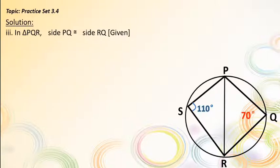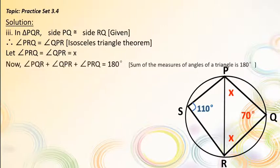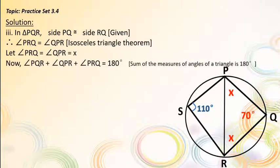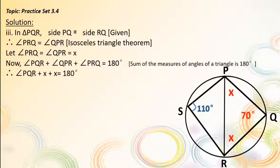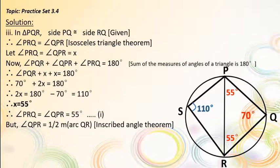Third, in triangle PQR, side PQ is congruent to side RQ. Therefore, by the isosceles triangle theorem, angle PRQ = angle QPR. Let the base angles angle PRQ = angle QPR = x. The sum of angles of a triangle is 180°. Therefore, angle PQR + angle QPR + angle PRQ = 180°, so 70° + x + x = 180°, giving 2x = 110°. Therefore, x = 55°. So angle PRQ = angle QPR = 55°.